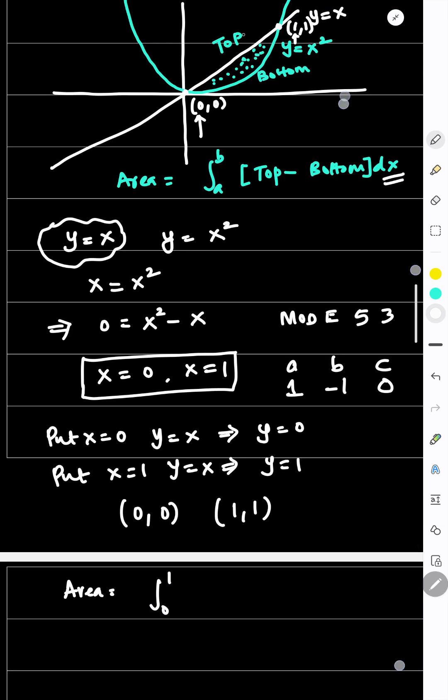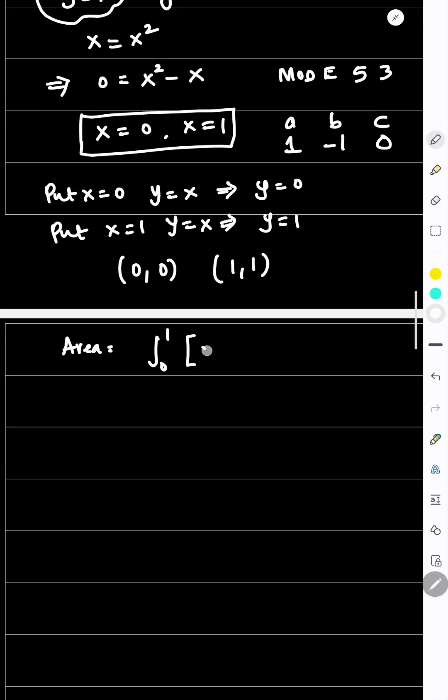And what is the top portion? This is the line, y equals x. So top is x and the bottom is the parabola x square times dx.